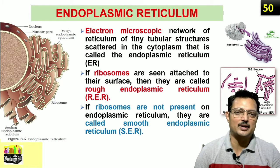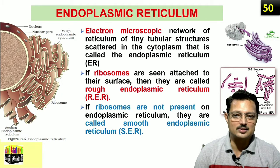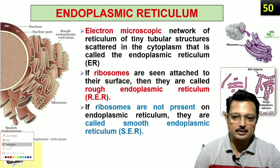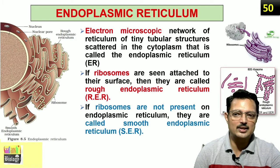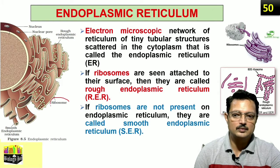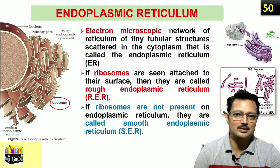Let us talk about the endoplasmic reticulum. These are networks of reticulum which are tiny tubular structures scattered in the cytoplasm, but you will find them near to the nucleus. If you see the diagram of a cell, you will find that these reticulums have some dot-like or granule-like structures on them. These are nothing but ribosomes — the special molecules that form protein. They give a rough appearance, and that is why they are called rough endoplasmic reticulum.